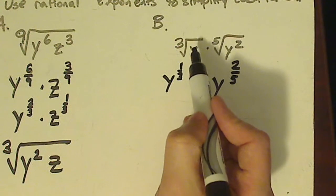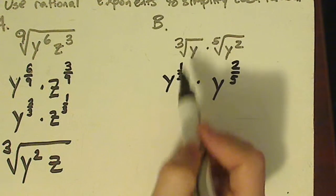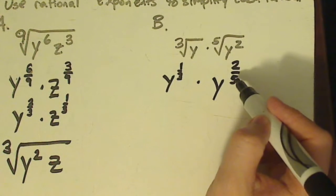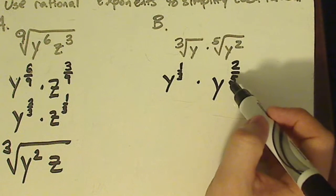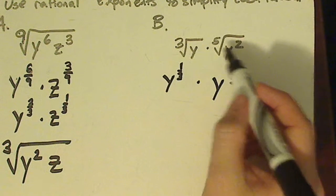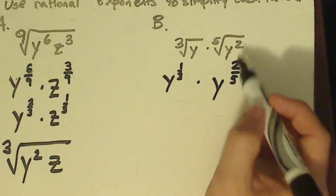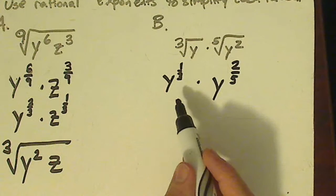Again, whatever power is being raised to, that goes in the numerator. Whatever the root is, that goes in the denominator. Same thing with this one. You have y. This is two fifths. So the root goes in the denominator. The power goes in the top part. Now you need to combine these together.